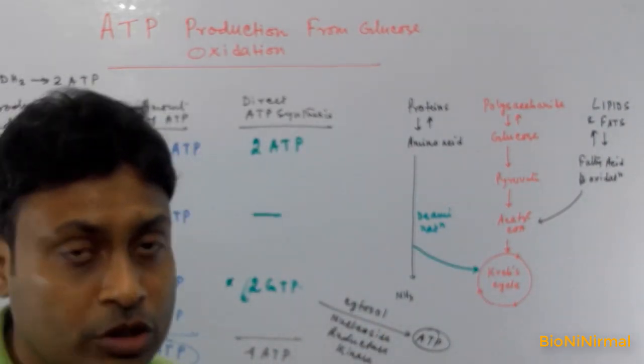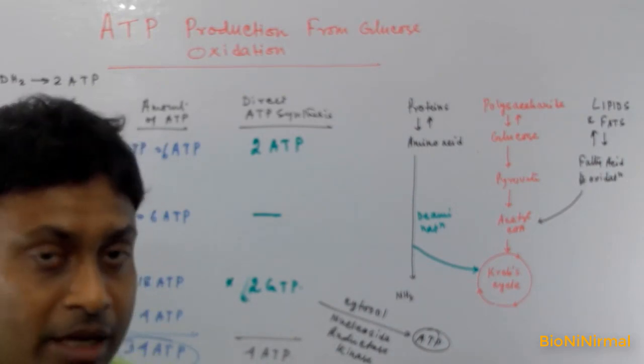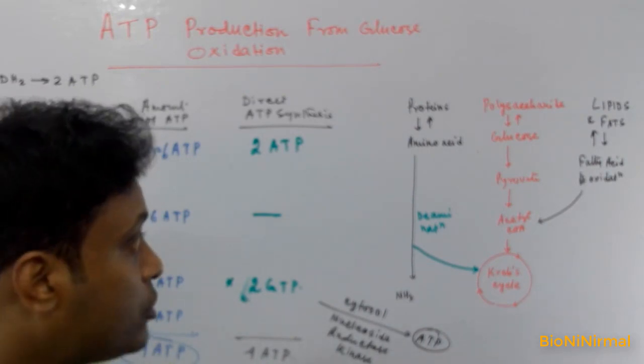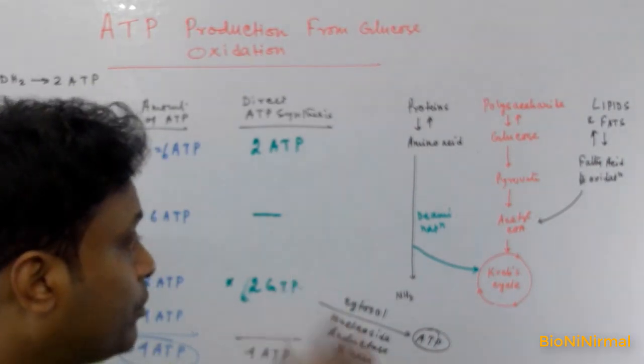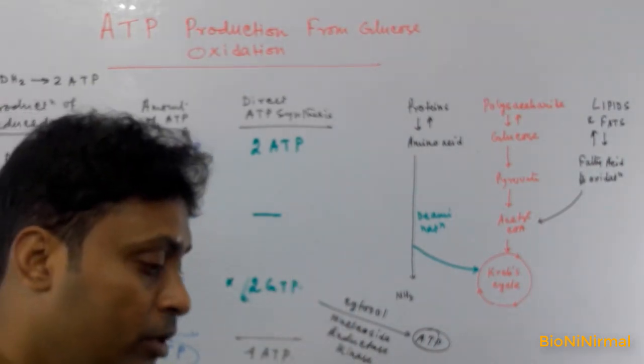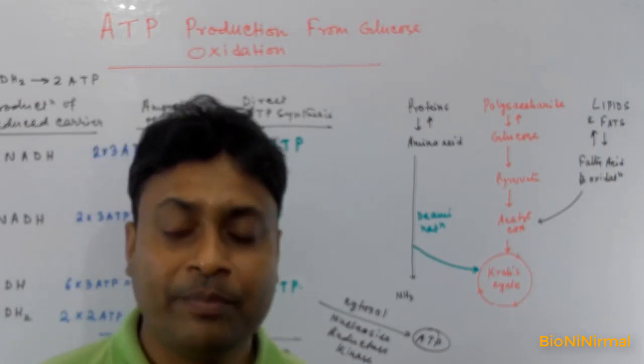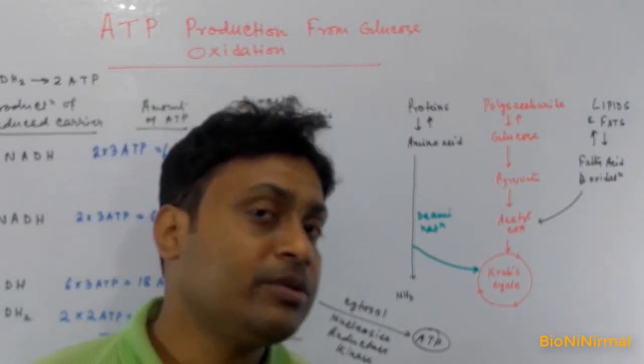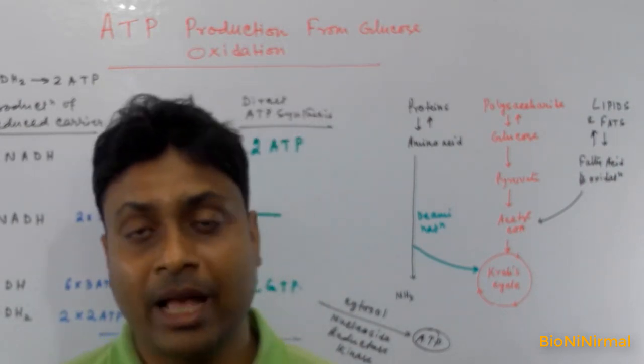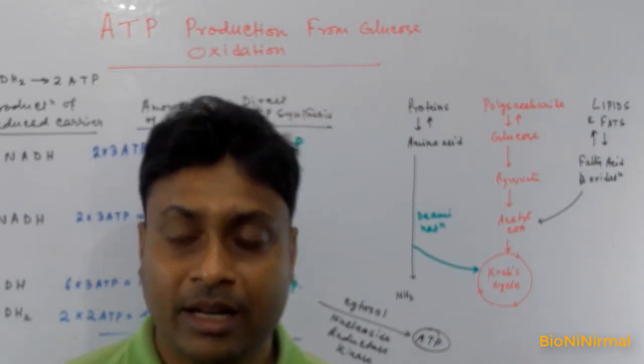Glucose is not the only source of ATP in our body. Lipids and proteins also produce ATP, and this ATP is produced via the Krebs cycle.